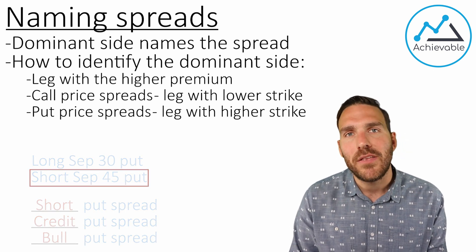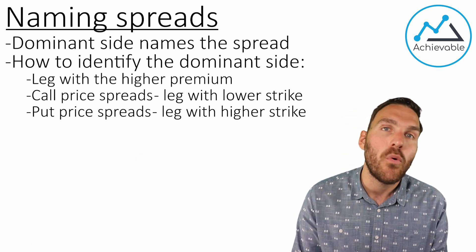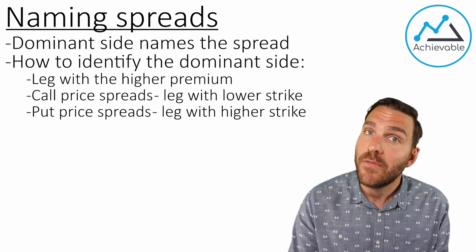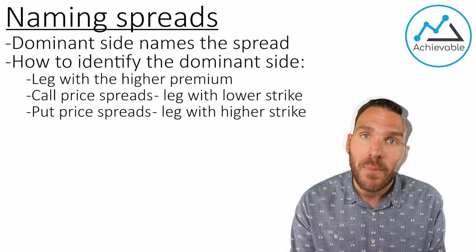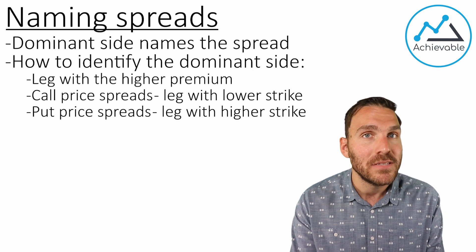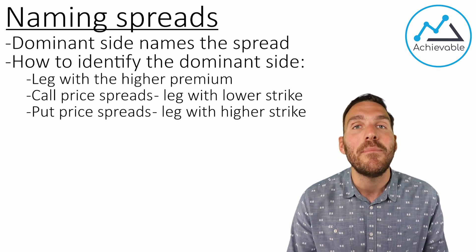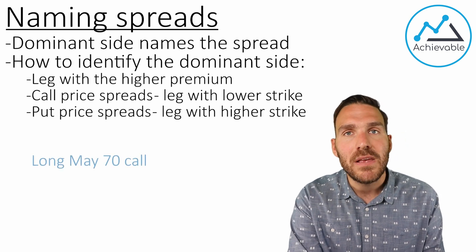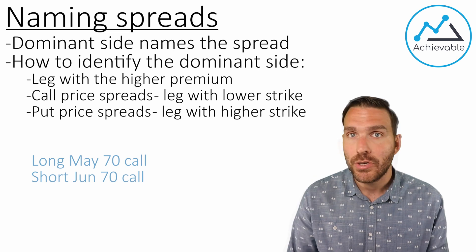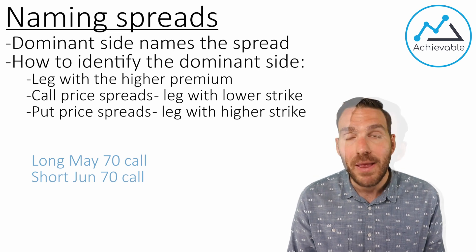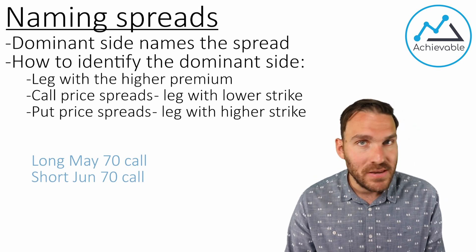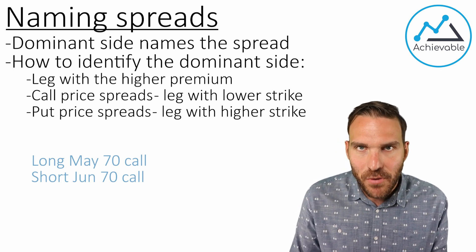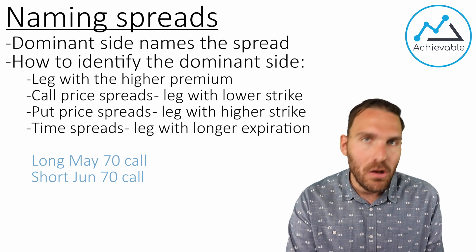The last type of spread you can be asked to name is a horizontal, time, or calendar spread — those all mean the same thing. A horizontal or calendar spread is one where we have the same strike prices but different expirations; the time is where the difference is. Let's assume we have a long May 70 call and a short June 70 call. Sure enough, this is a calendar spread — same strike price, but different expirations. The way we determine the dominant side with a calendar spread is by identifying which option will last longer — whatever lasts longer is the dominant side every time.